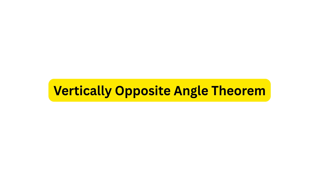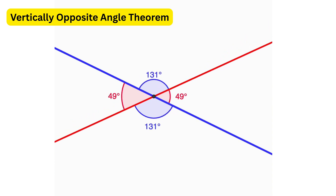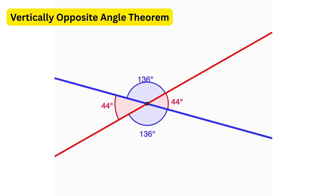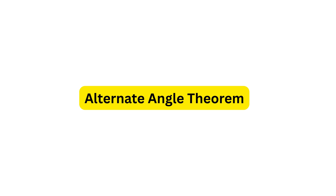Next is the vertically opposite angle theorem. When two straight lines intersect, the vertically opposite angles formed are always equal. For example, if one of the angles at the intersection is 70 degrees, the angle directly opposite will also be 70 degrees. If another angle is 110 degrees, its vertically opposite angle will also be 110 degrees.